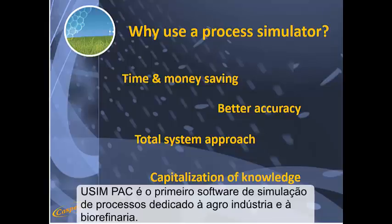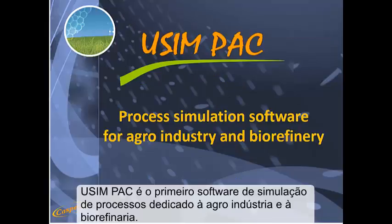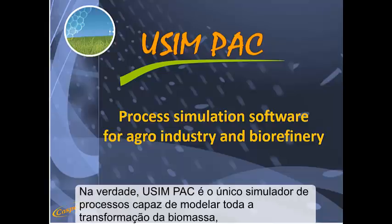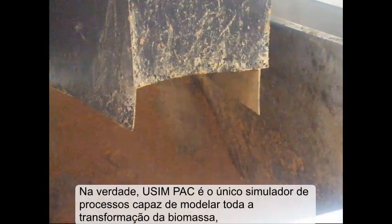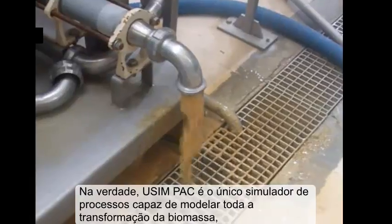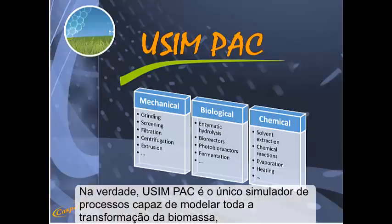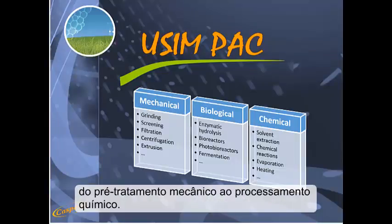Usimpak is the first process simulation software dedicated to agro-industry and biorefinery. Usimpak is the only process simulator able to model the whole transformation of harvested biomass, from mechanical pretreatment to chemical processing.